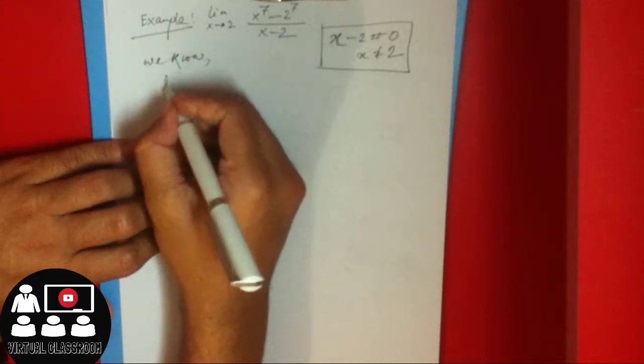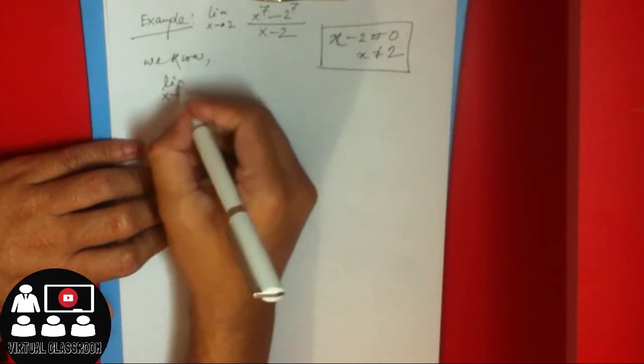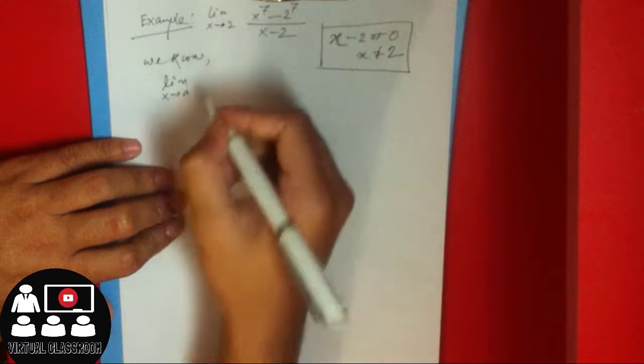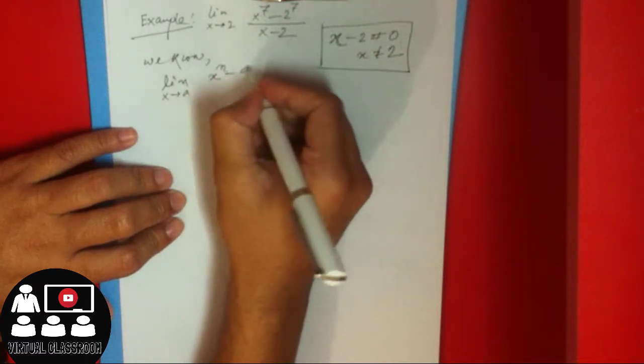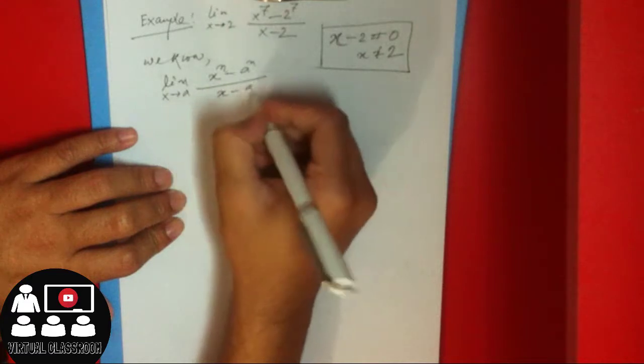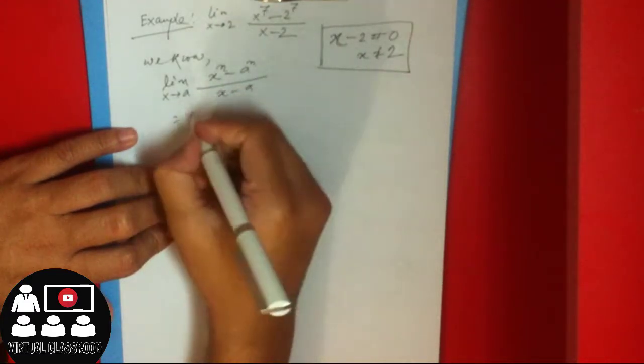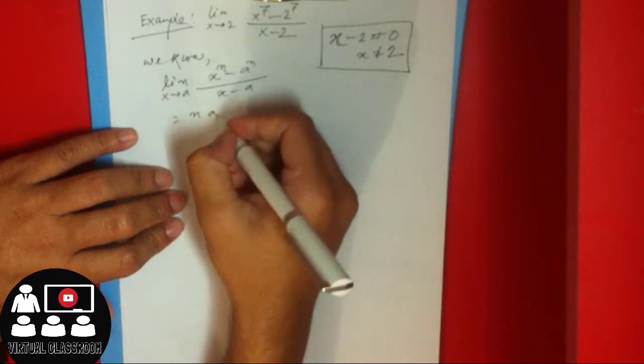We know the limit as X approaches a of X to the power n minus a to the power n, divided by X minus a, equals n times a to the power n minus 1.